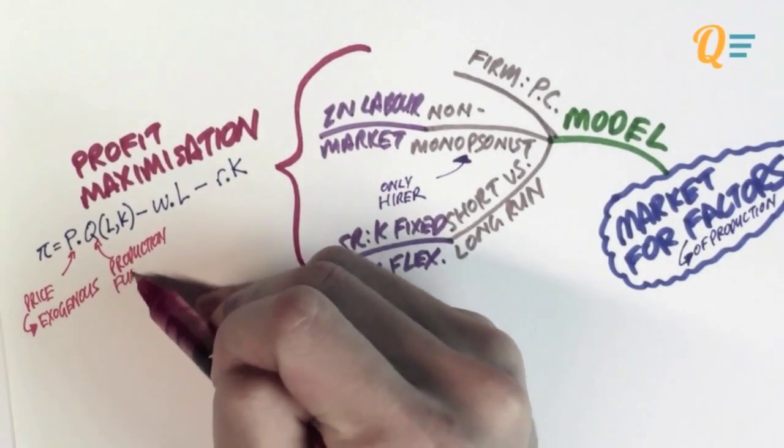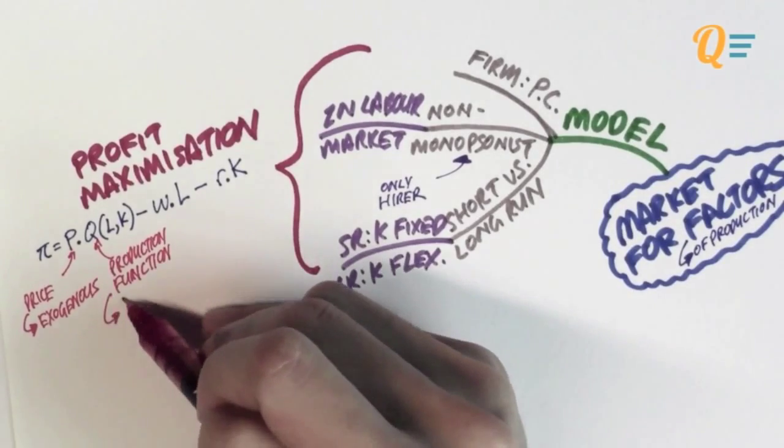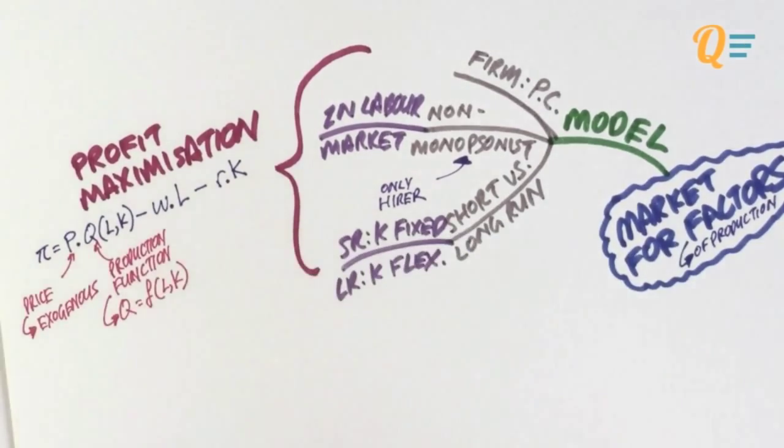Now, Q, actually Q(L, K), refers to the production function. In order to build anything, to build any goods, you're going to need labour and capital. And that is why the production function here is a function of labour and capital at the same time.